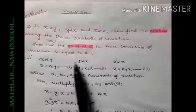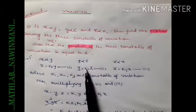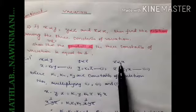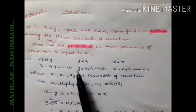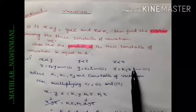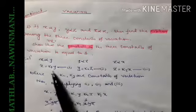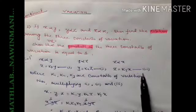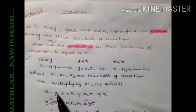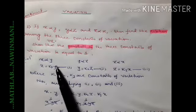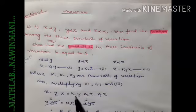For the second variation, convert it into an equation and introduce constant k2. For the third, convert the variation into an equation and introduce constant k3. Now you have three equations. Since you have to find the product, you multiply the left-hand sides together and the right-hand sides together.